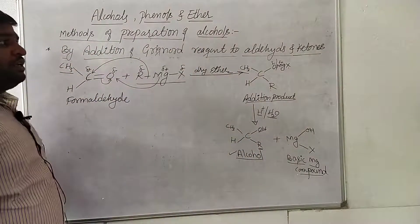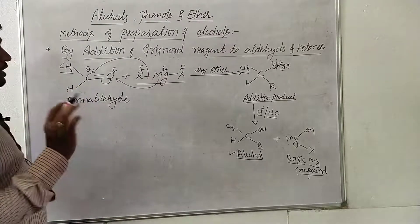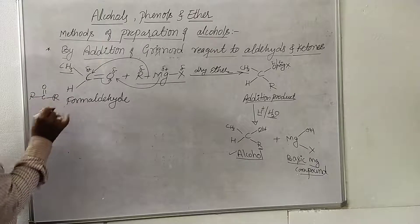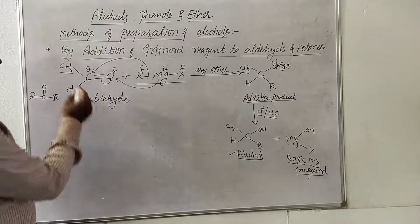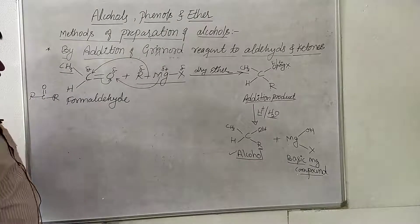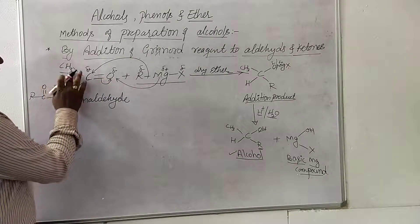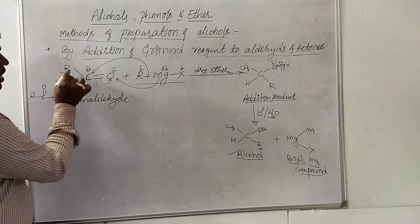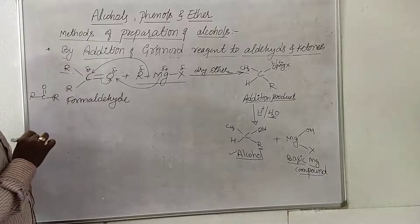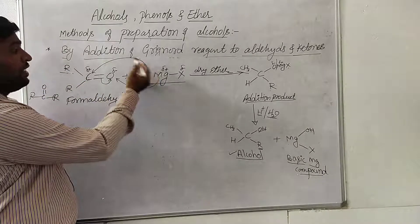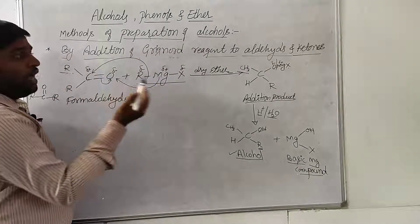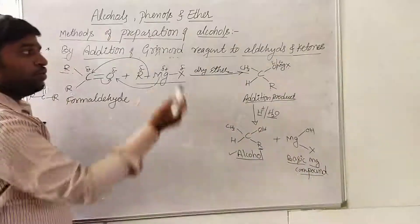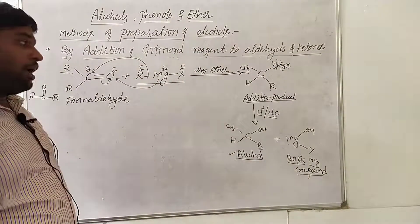Similarly, one more example to consider is acetone — these are examples for ketones. What is the general formula for a ketone? It is R–C(=O)–R. Either side of the carbonyl you must write alkyl groups. The addition of Grignard reagent to the ketone follows the same method. You may prepare alcohols by addition of Grignard reagent to either aldehydes or ketones — you will get the corresponding alcohols.